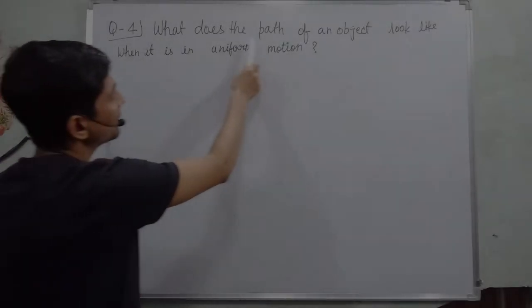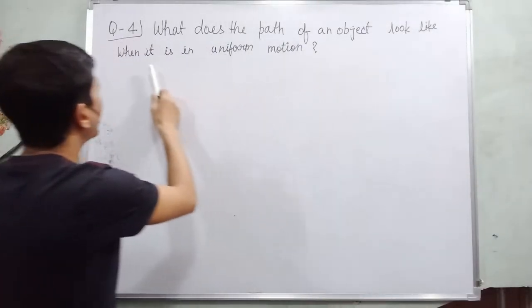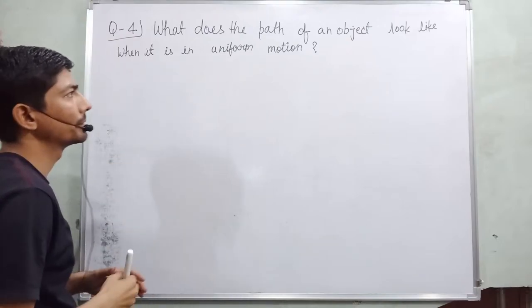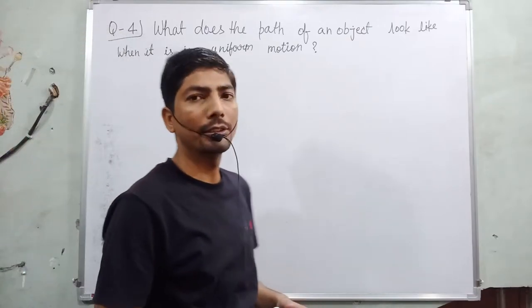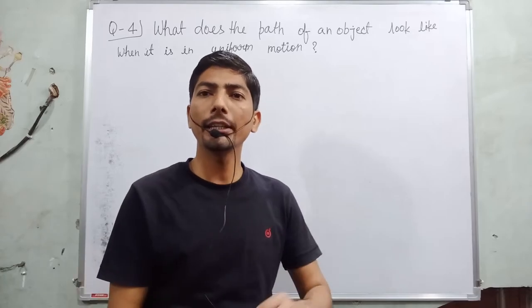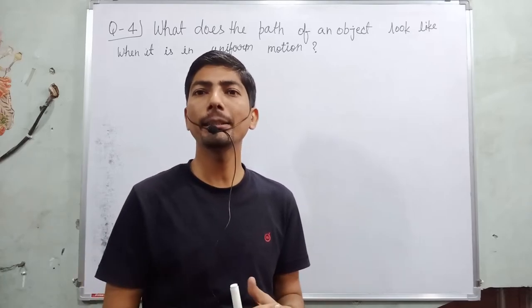Question: what does the path of an object look like when it is in uniform motion? Okay, the question asks, when object move in uniform motion, how path is appeared?